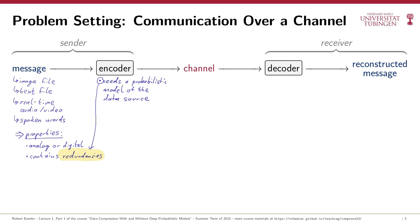These machine learning models can capture more complicated statistical patterns than any traditional compression method. For example, already on problem set number three, you will be guided to implement a fully functioning compression method for English text that models English orthography and grammar with a so-called recurrent neural network. Later in this course, we'll also discuss probabilistic machine learning models for images and other data types.